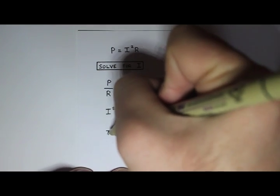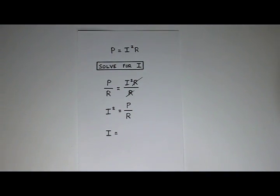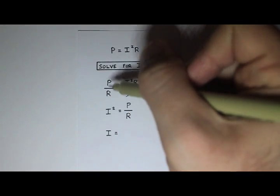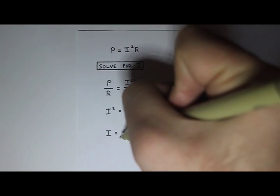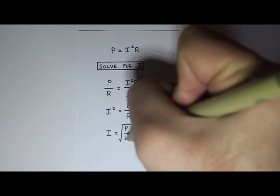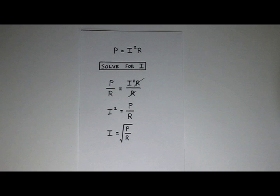And then to get the i by itself, to reverse a square, I want a square root. So I'm going to square root both sides. So the square root of i squared is just i. And the square root of p over r, well, it's just the square root of p over r. You can't really simplify that at all. But there's our answer. We have i in terms of p and r.